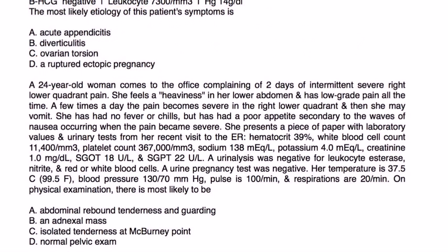Next question: a 24-year-old woman comes to the office complaining of two days of intermittent severe right lower quadrant pain. She feels heaviness in her lower abdomen, and a few times a day the pain becomes severe and she may vomit. She has had no fevers or chills but has a poor appetite. She presents lab values from a recent ER visit: hematocrit 39, WBC 11,400, platelets 367,000, sodium 138, potassium 4, creatinine 1, AST 18, ALT 22; urinalysis and pregnancy test both negative.